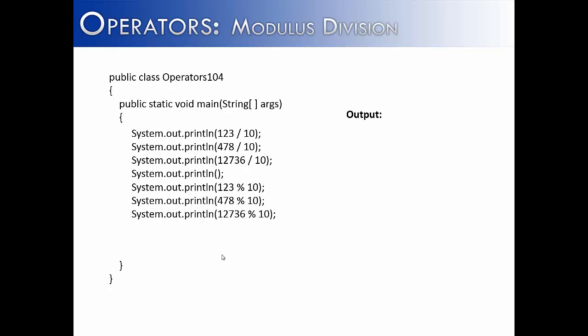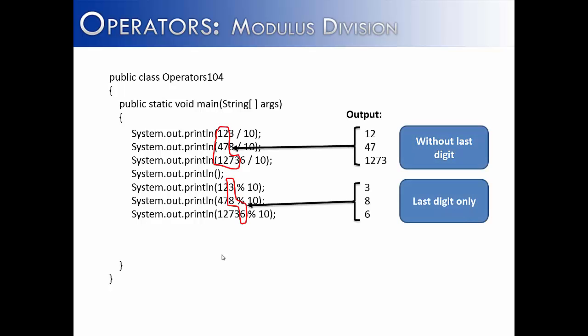In this example, we want to show another use. And it might not be obvious what we're trying to accomplish here. But when you divide a number by 10, what it's going to do with integer division is lop off the decimal place and give us all of the digits except for the last digit. And then if we modulusly divide by 10, we're going to get the last digit. So you can see the top three numbers are exactly the same as what is in the print line statements, except for the last number has been removed. Whereas the bottom three print line statements are giving us the rightmost digit, 3, 8, and 6. So this is another common use of modulus division.